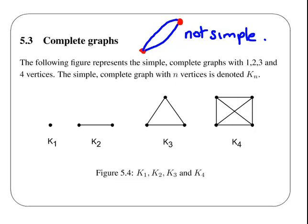It is a complete graph because between each pair of vertices there is an edge. They are all directly connected — they are all adjacent to each other in terms of the graph. So down here we have four vertices on K4, and they are all connected to each other.